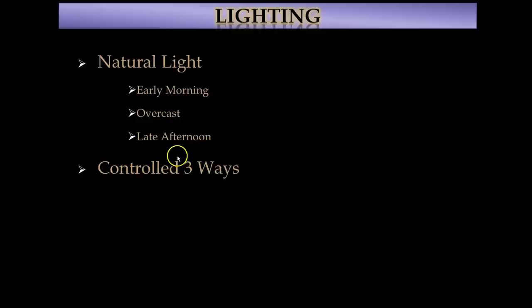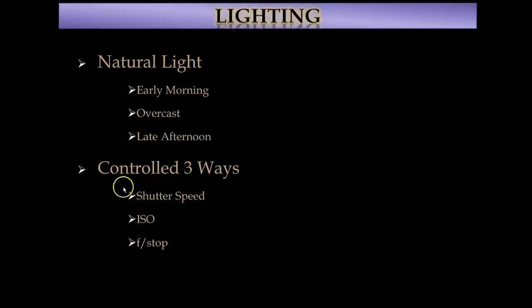You can control the amount of light you let in three ways: with your shutter speed — how fast your shutter opens and closes; your ISO — how sensitive your sensor becomes to the light; and finally, the f-stop — how wide your aperture opens. Each of these has certain strengths and carries with it certain liabilities. Again, all of this is an entire workshop unto itself, but this is just to get you thinking.